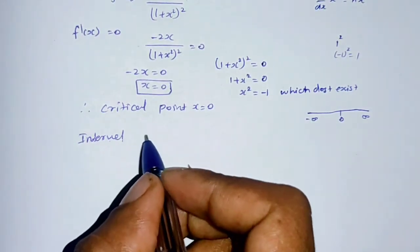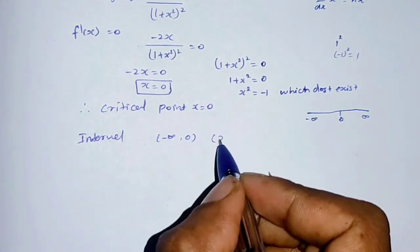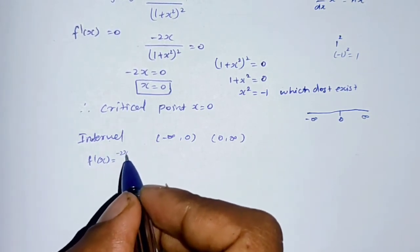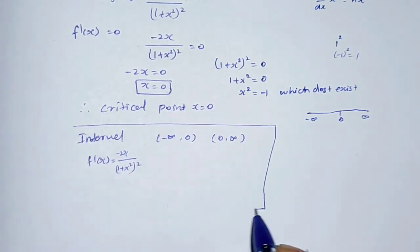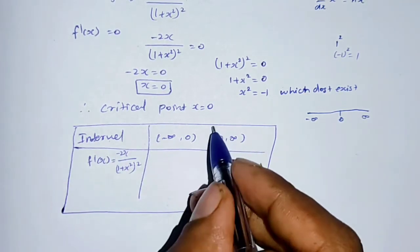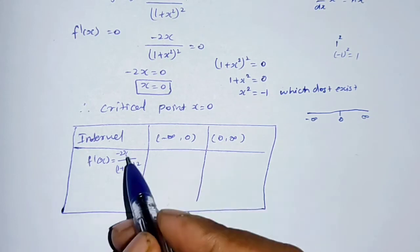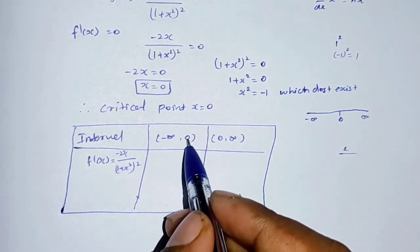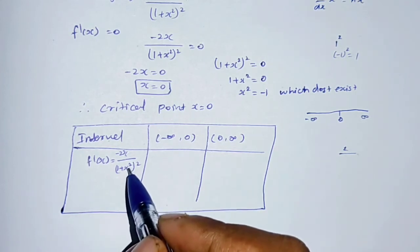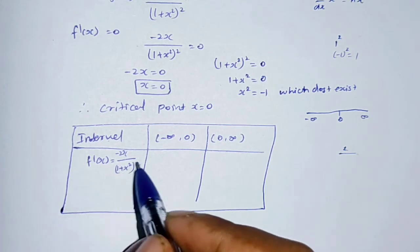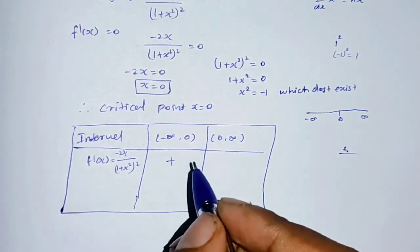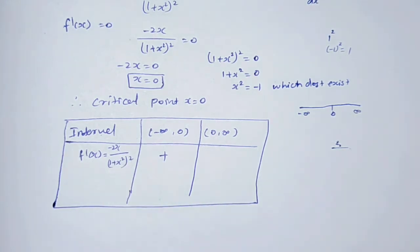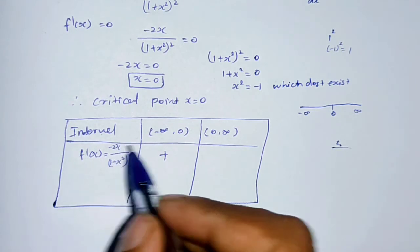The critical point x = 0 divides the number line into two intervals: minus infinity to 0, and 0 to plus infinity. Now we check the sign of f'(x) = -2x divided by (1 + x²)² in each interval. Substituting x = -1: numerator is -2 times -1 = positive 2; denominator (1 + 1)² is positive.